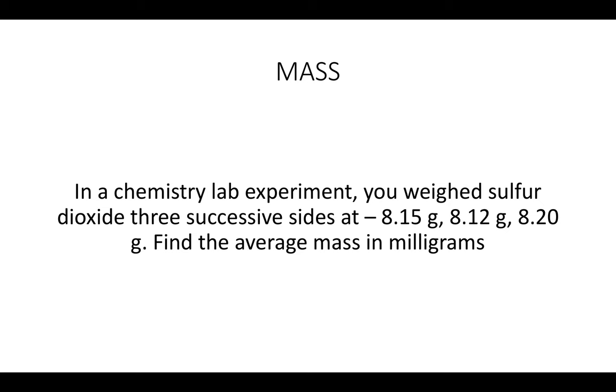Let's read the problem. In a chemistry lab experiment, you weigh sulfur dioxide at three consecutive times where you have 8.15 grams as your first measurement, 8.12 grams as your second measurement, and 8.20 grams as your third measurement. The question is find the average mass in milligrams. Obviously to find the average mass you have to add it and divide by three.